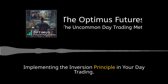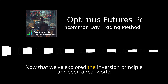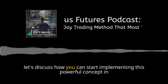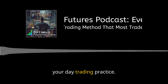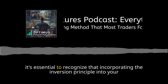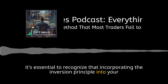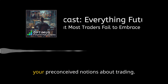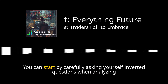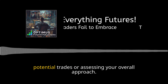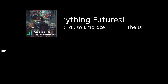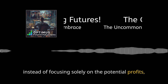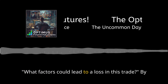Implementing the inversion principle in your day trading. Now that we've explored the inversion principle and seen a real-world example of how unconventional thinking can lead to success in trading, let's discuss how you can start implementing this powerful concept in your day trading practice. It's essential to recognize that incorporating the inversion principle into your trading strategy is gradual — it requires a shift in mindset and a willingness to challenge your preconceived notions about trading. You can start by asking yourself inverted questions when analyzing potential trades. For example, when considering a specific trade, instead of focusing solely on the potential profits, ask yourself, 'What factors could lead to a loss in this trade?'